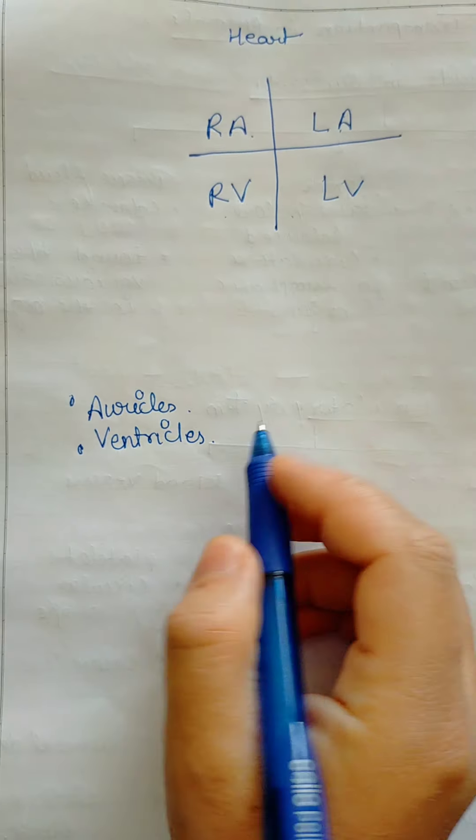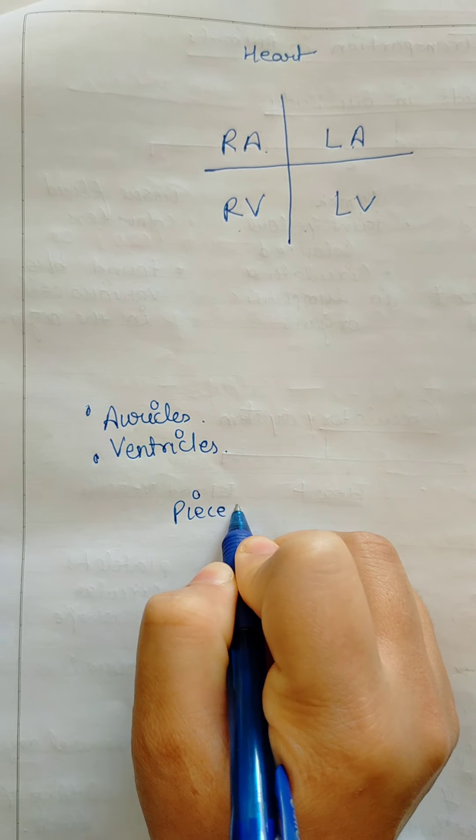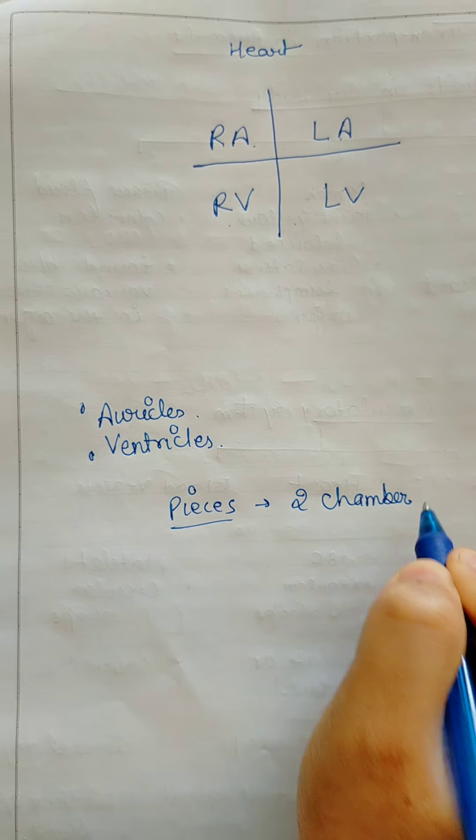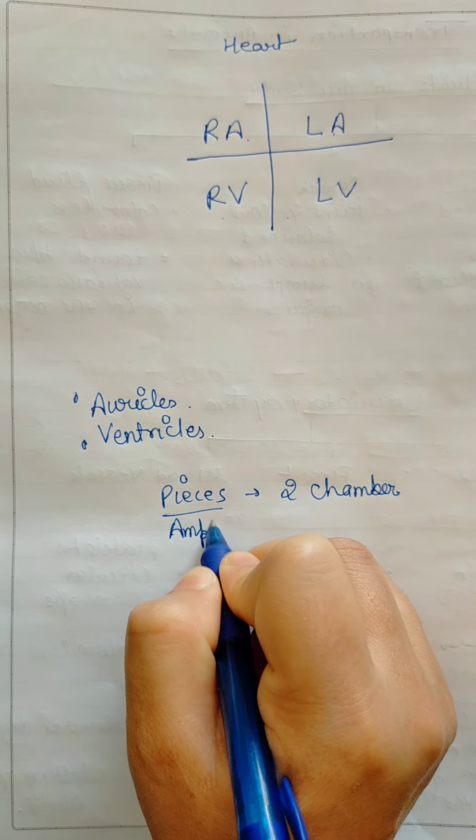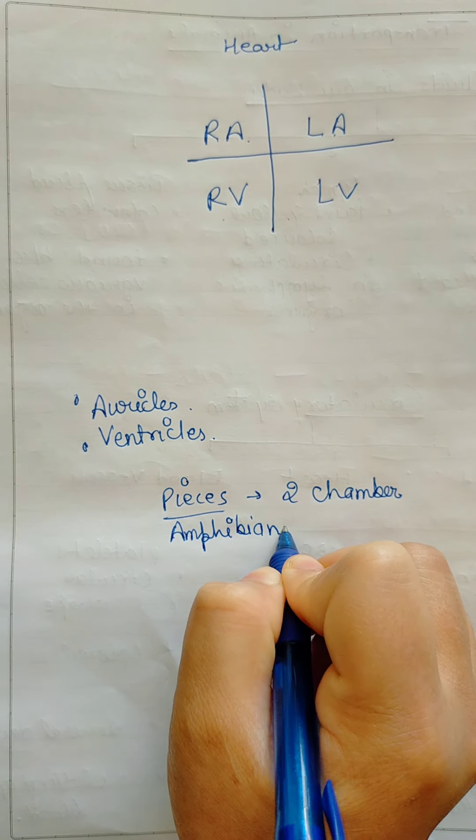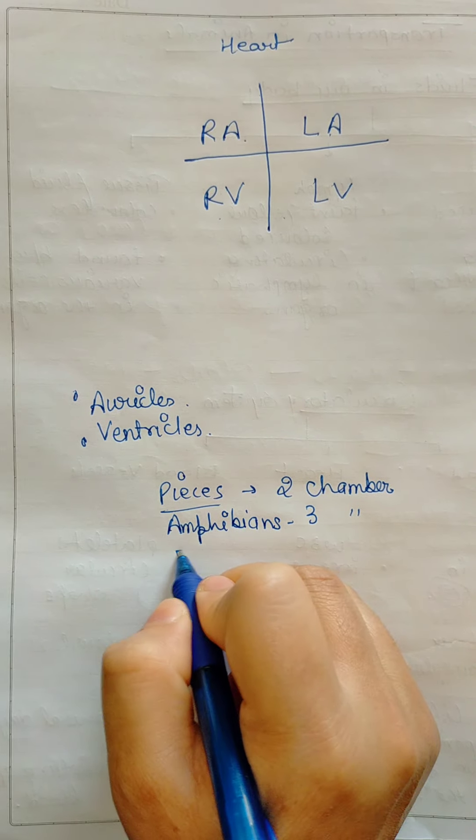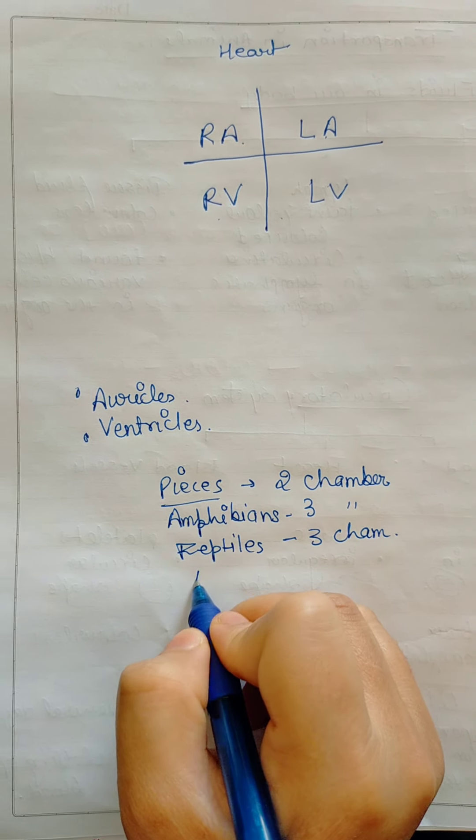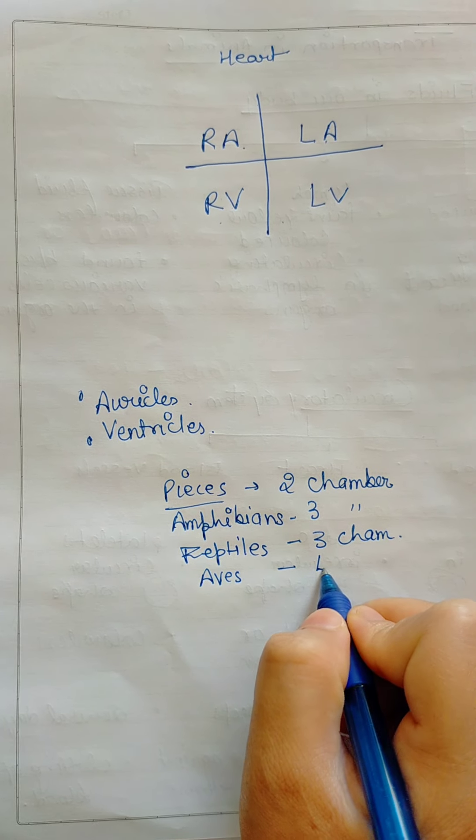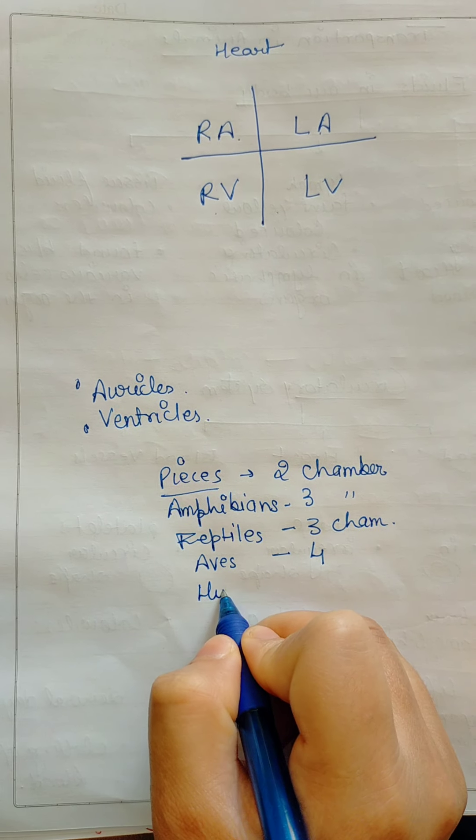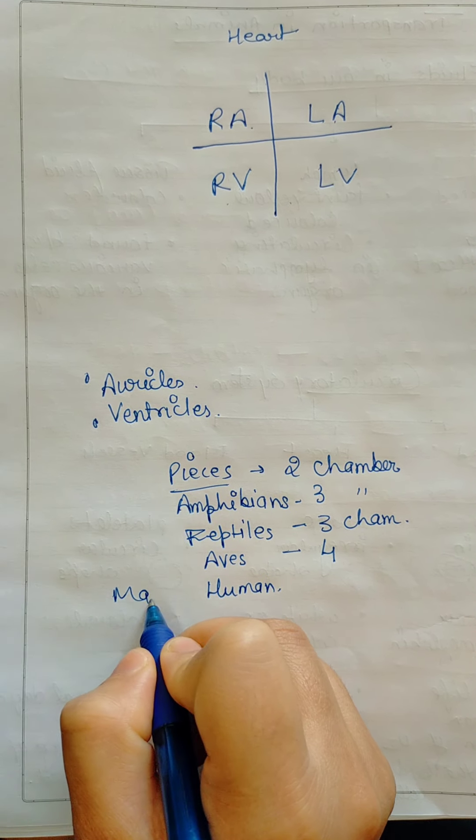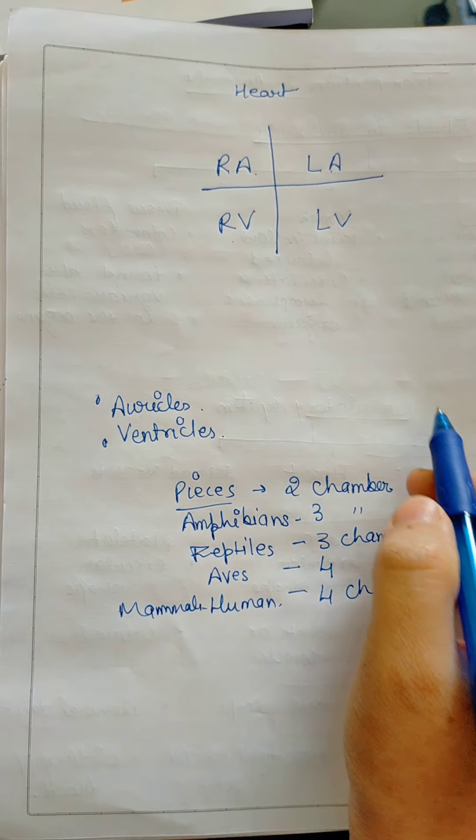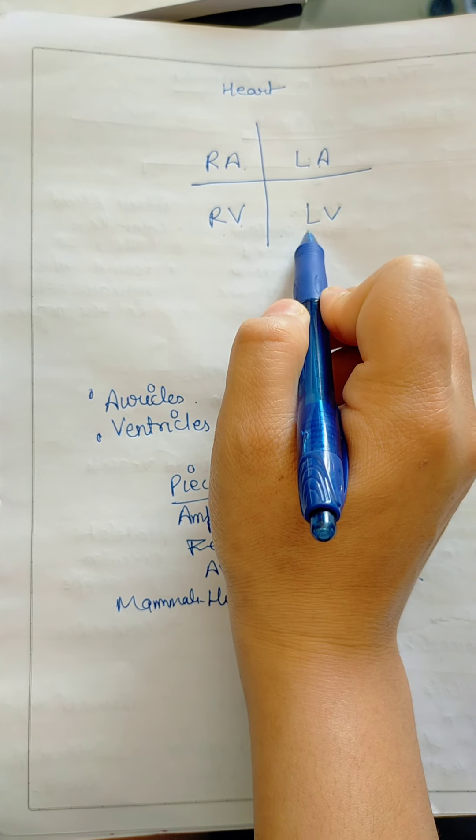We have four-chambered heart. If we talk about Pisces, fishes, how many? Two-chambered heart. After Pisces, amphibians, how many? Three-chambered heart. Reptiles, three-chambered heart. Aves, birds, what? Four-chambered heart. Human, that us, mammals, how many? Four-chambered heart. This is four-chambered heart. The more they have, these are four-chambered hearts: one, two, three, four. Just four-chambered heart.